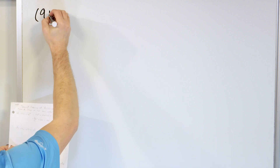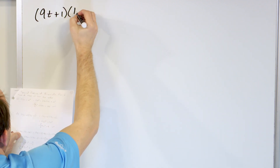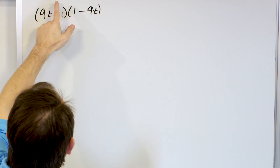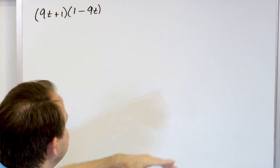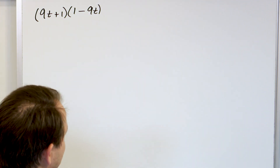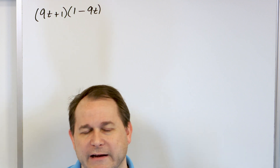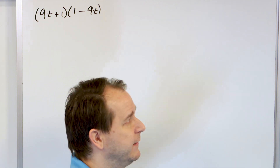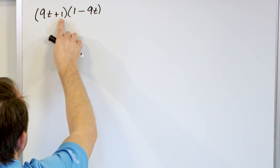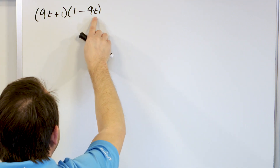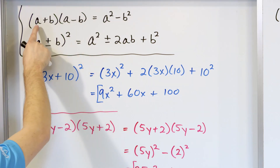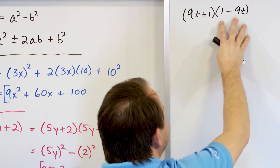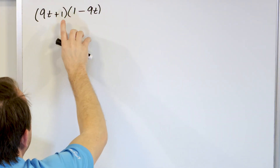What if we have 9t(t + 1)(1 - 9t)? This is where things get a little tricky. Of course you can multiply it out — distribute the 9t in, distribute the 1 in, cancel everything — but I want to show you how to use these special products. Notice (9t + 1) and (1 - 9t): the second binomial is almost the same but it's backwards — it has 1 first and 9t second.